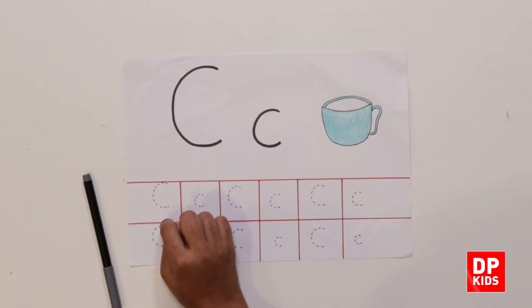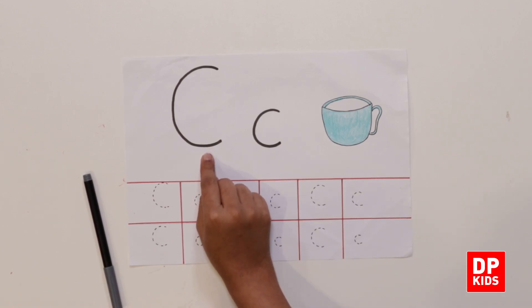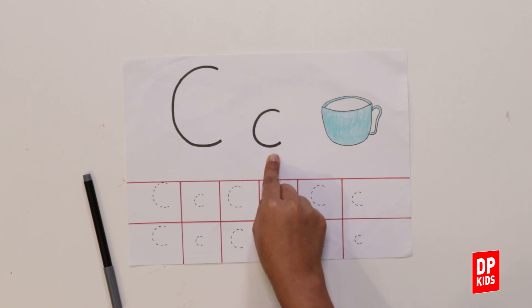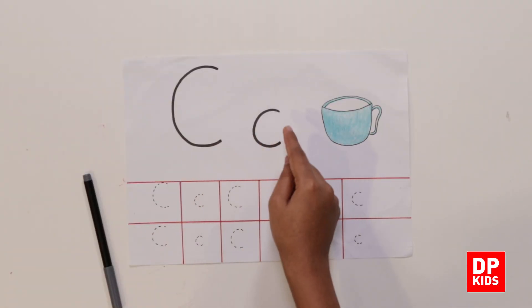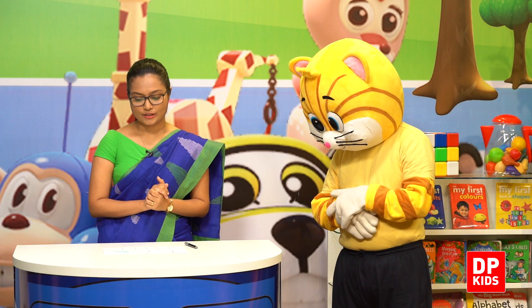So my dear little girls and boys, now we are going to trace the letter C. This is the big C and this is the small C. So this is the upper case C — the big letter. And this is the lower case C — the small letter. C for cup.